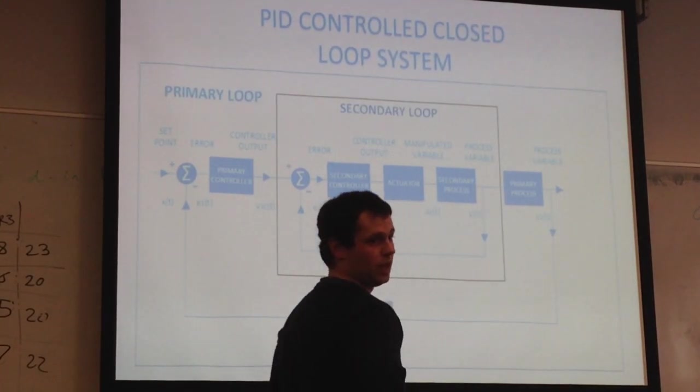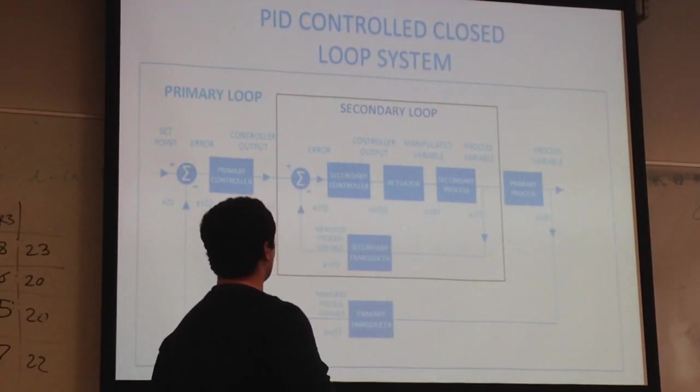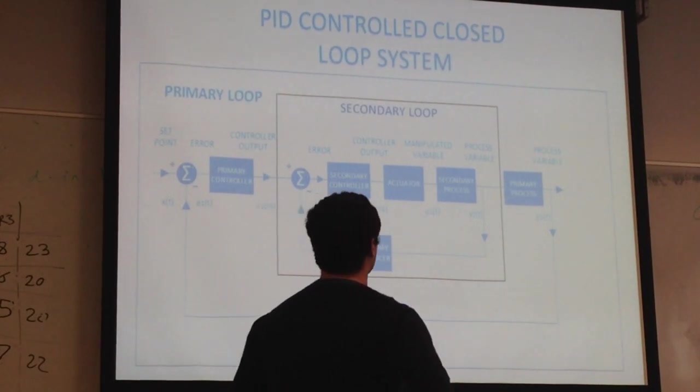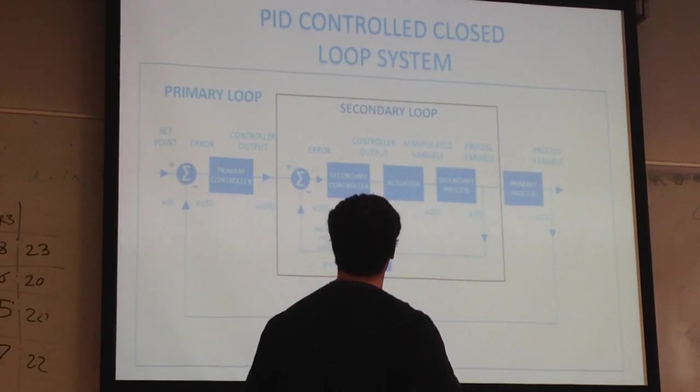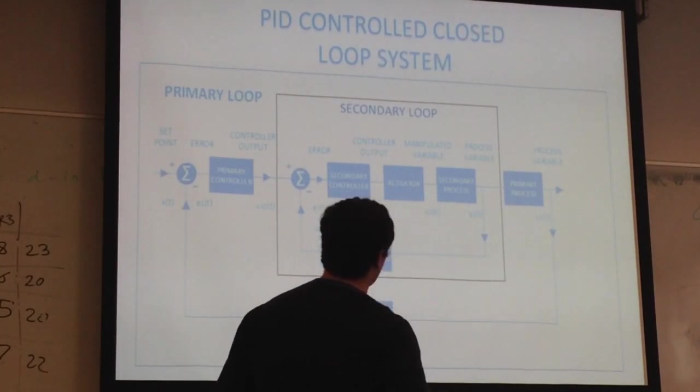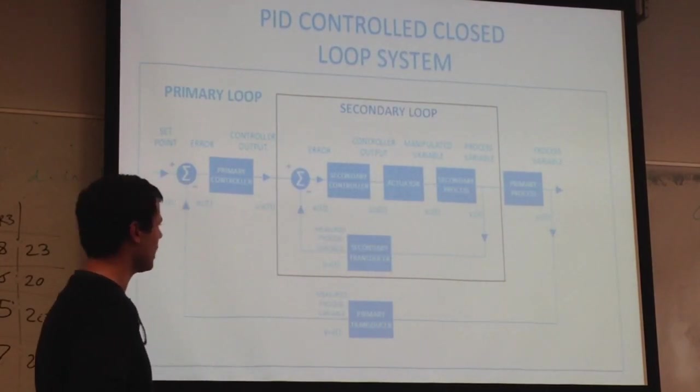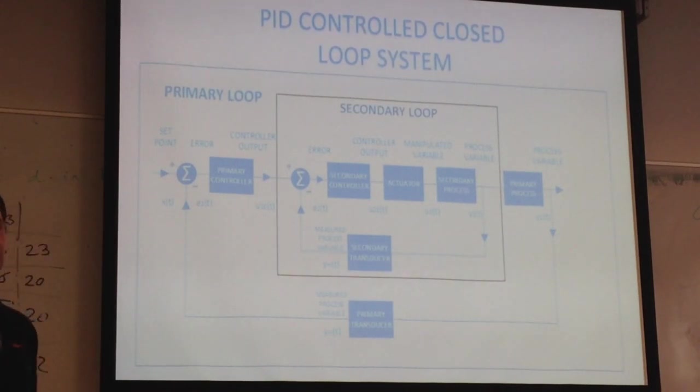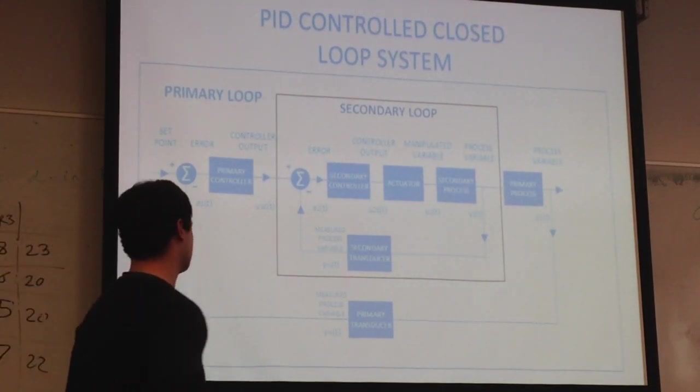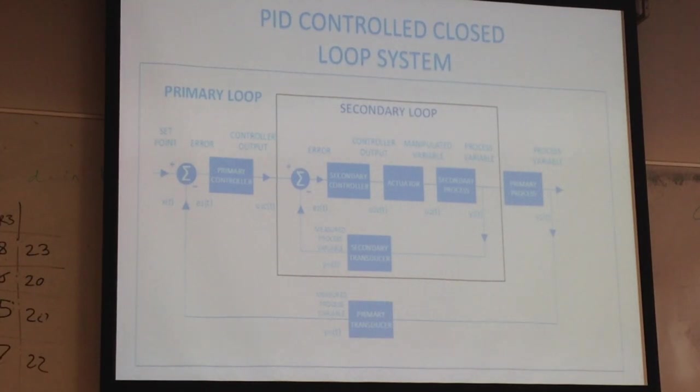Well, the actuator is actually going to be at least three valves or two valves. And so you have a secondary process and a primary process. And the secondary process is the jacket and the primary process is the tank. And obviously the tank contains the product.